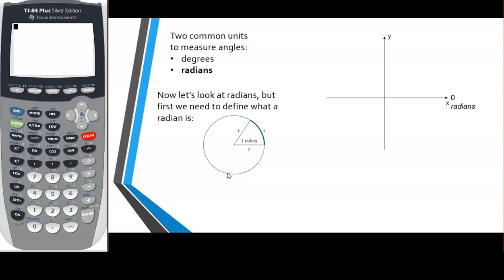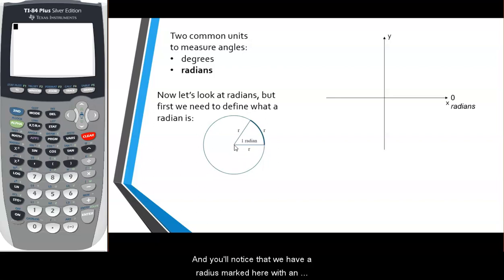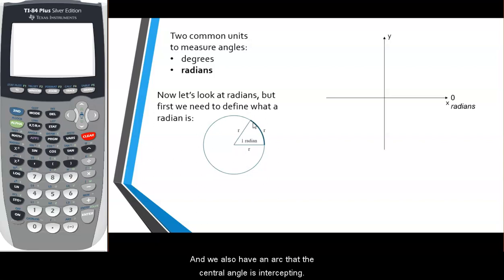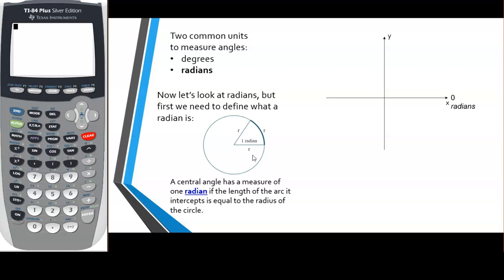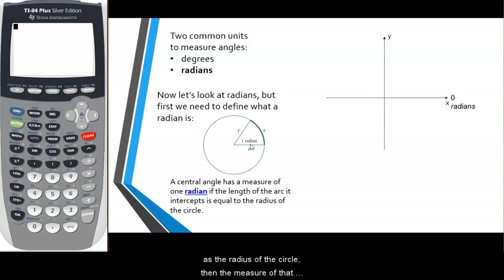Here we have a circle and a central angle. You'll notice we have a radius marked with r, and another radius also with r. We also have an arc that the central angle is intercepting, also indicated with r. A central angle has a measure of one radian if the length of the arc it intercepts is equal to the radius of the circle. So if we make that angle just big enough so that the arc is the same length as the radius, then the measure of that angle — the size of that rotation — will be one radian.